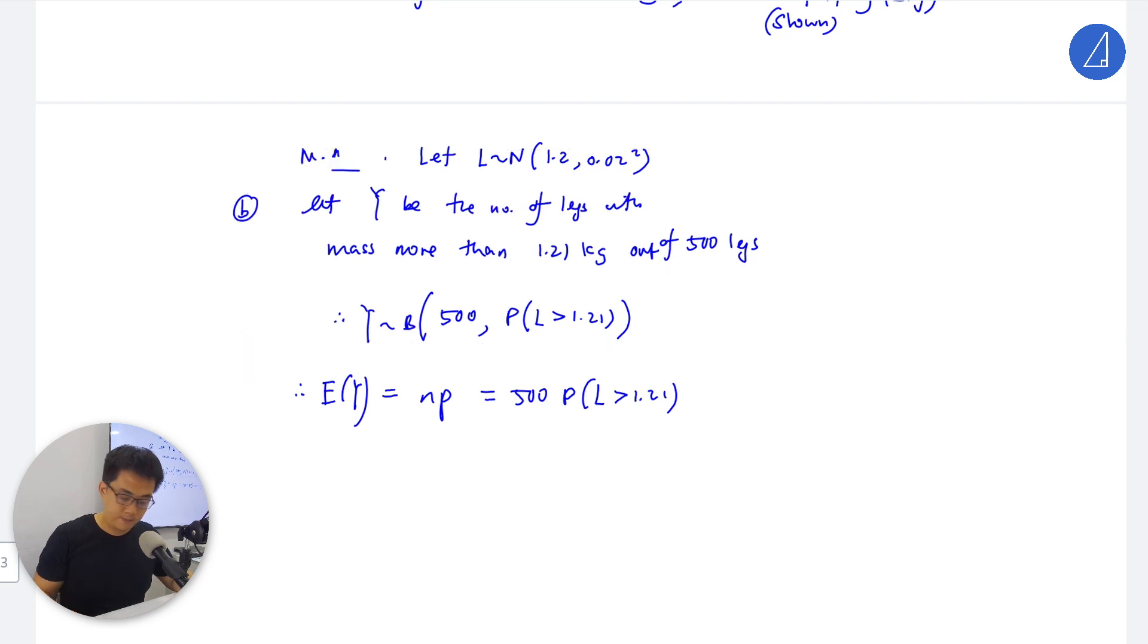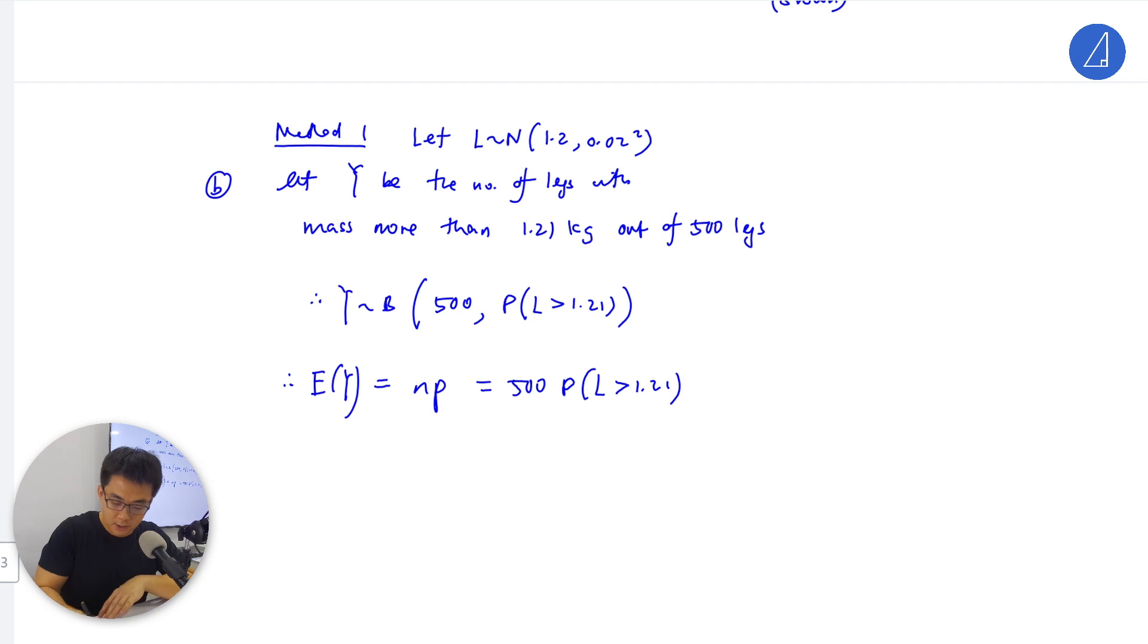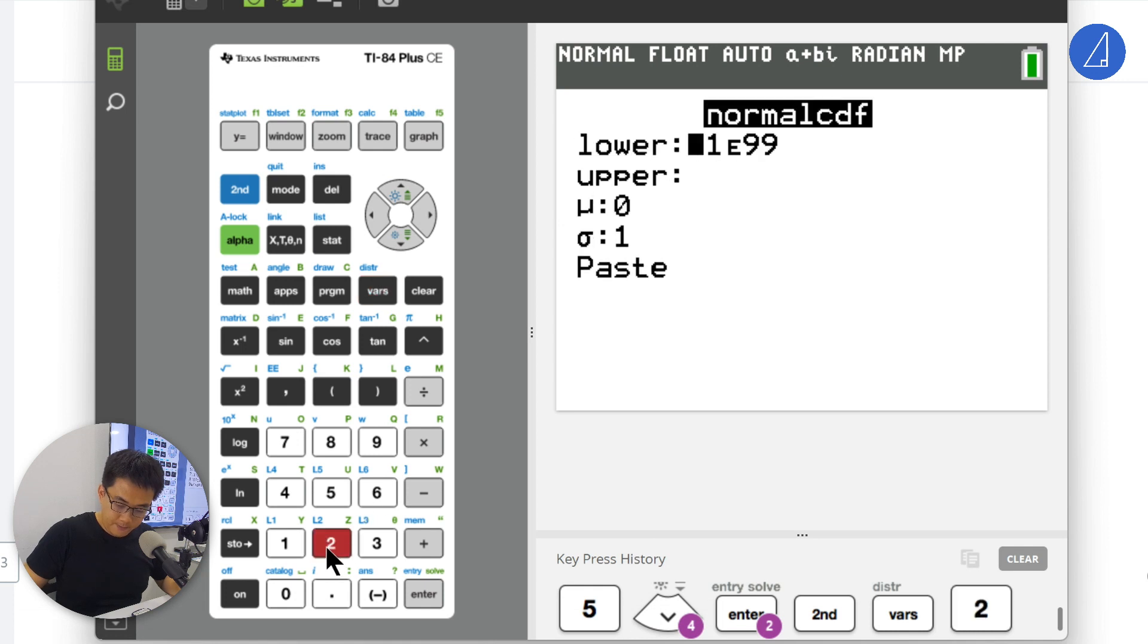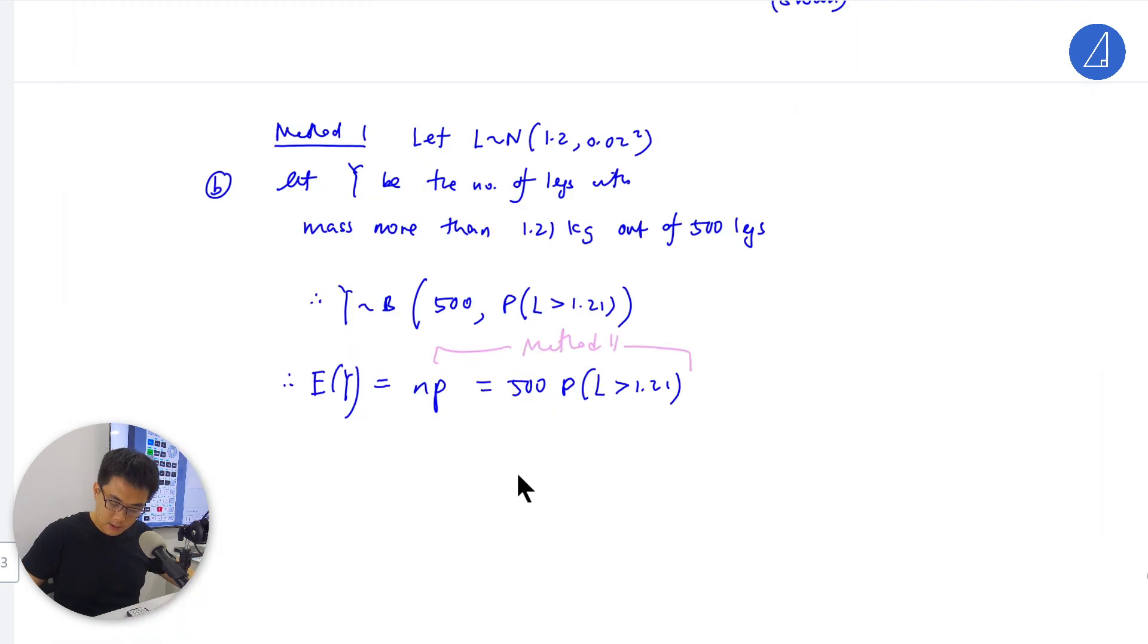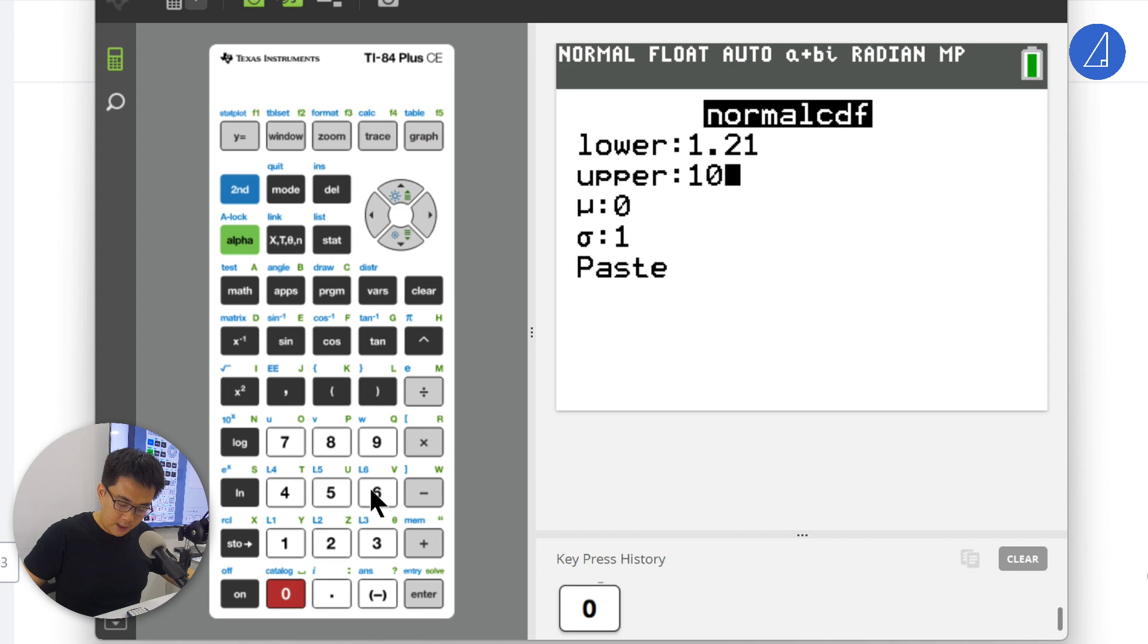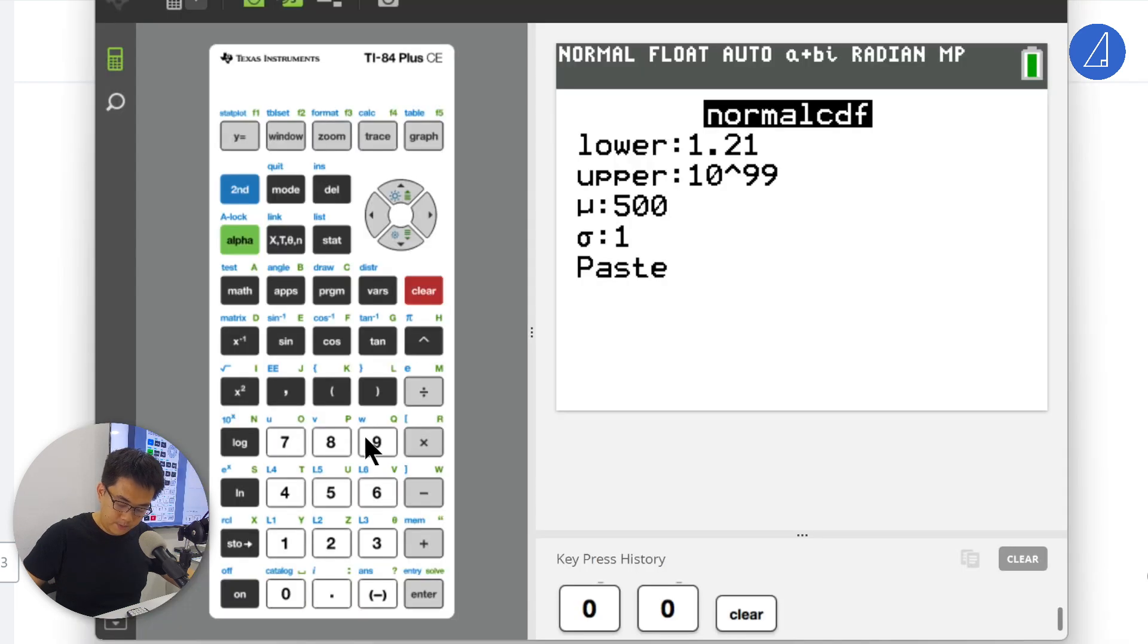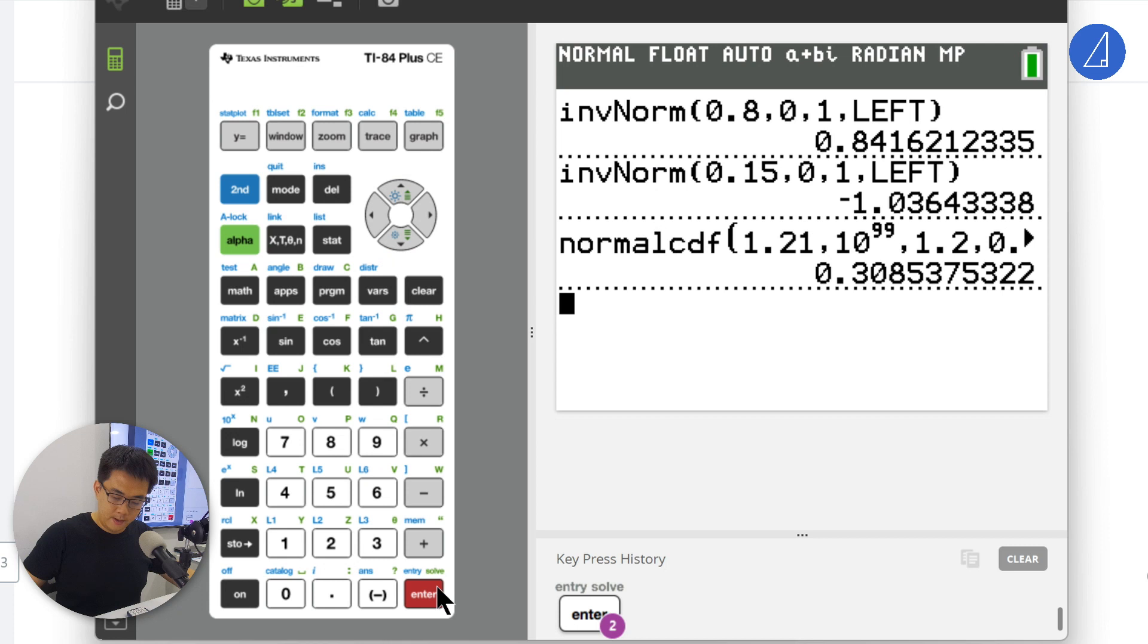Method 2 is to think of it as weighted average. Key in the calculator: normal CDF, lower as 1.21, upper as 1E99, mu is 1.2, and 0.02 without the square. Take this and multiply by 500. Done, part B.